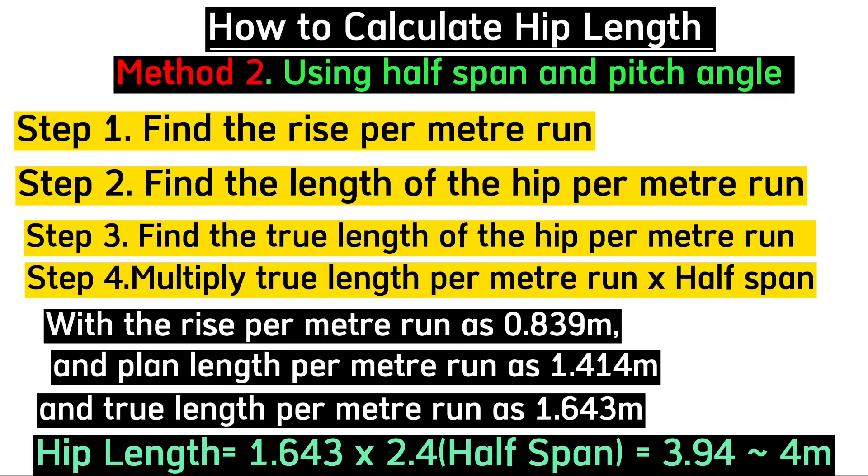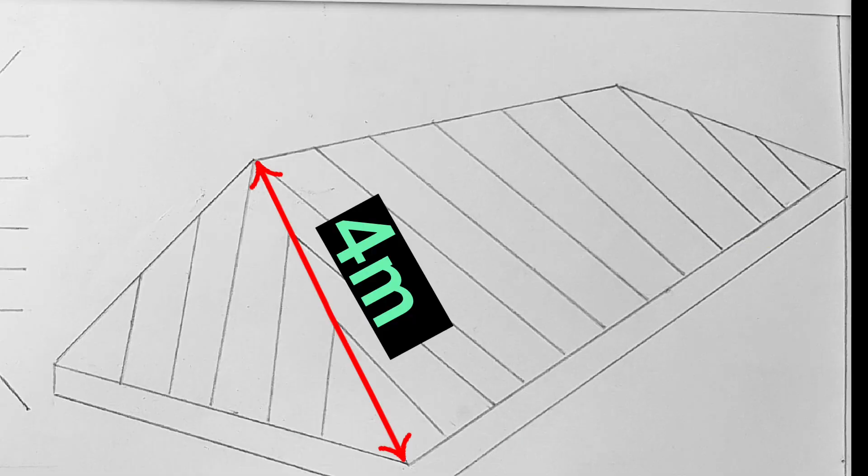The fourth and final step is to multiply your true length per meter run with your half span. Taking our half span to be 2.4 meters as previously used, this will be 2.4 × 1.643, which gives us 3.94 meters. We can round this to 4 meters as the rest will be cut. Four meters is the final length of our hip.